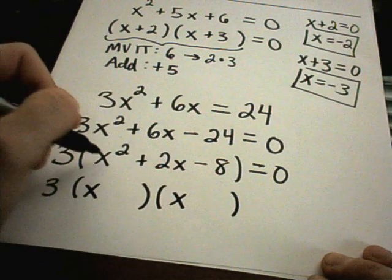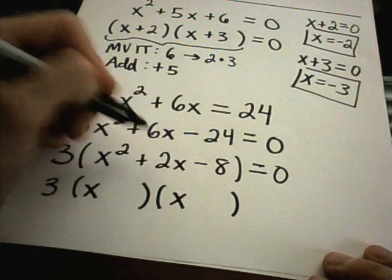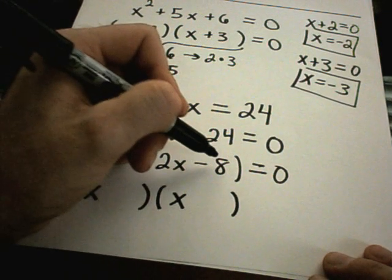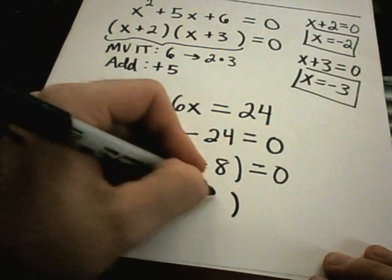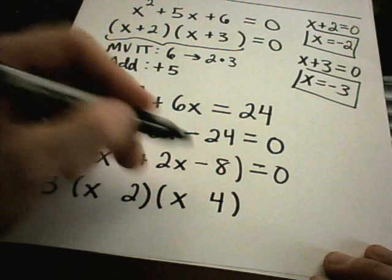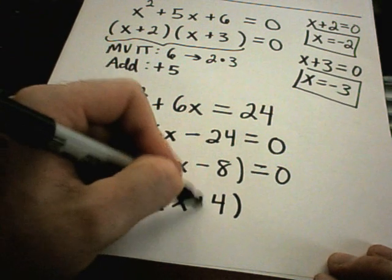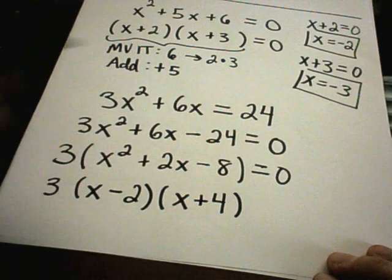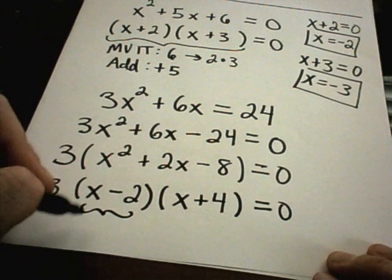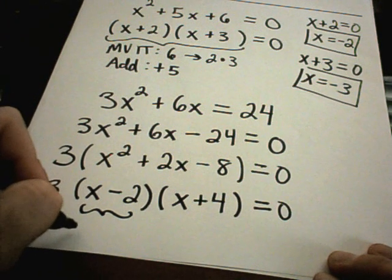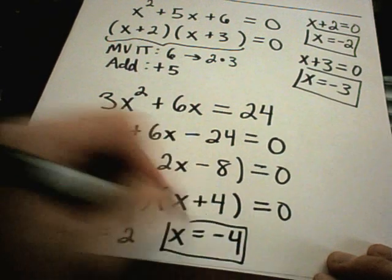So the 3 is just kind of hanging out. I'll need an x and an x to get my x squared term. I need two numbers that multiply to negative 8, but add to positive 2. I could use 1 and 8, but that's not going to give me a 2 somehow. How about 2 and 4? That certainly multiplies to 8. To get a negative 8, one term's going to have to be positive, one will have to be negative. Since I want a positive 2, I'll make the larger of the two numbers positive. So I'll have x minus 2, x plus 4 equals 0. Just like before, if I set each individual piece in parentheses equal to 0, I'll get x equals 2 being a solution, and I'll get x equaling negative 4 as another solution.